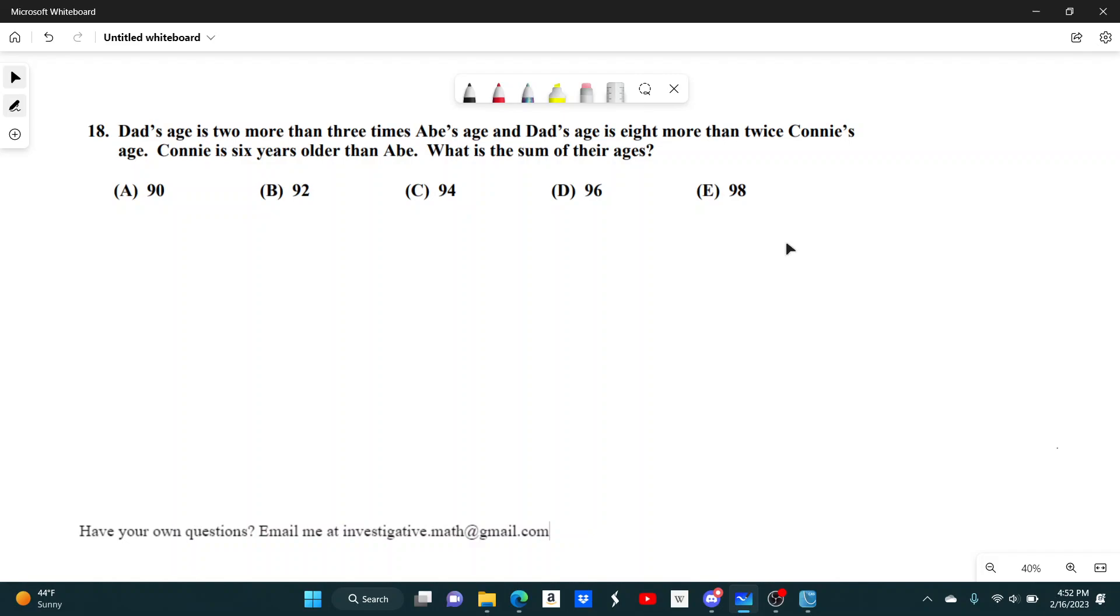So this is a pretty classic system of equations question between these ages. We can set up equations to represent the sentences that they give us. Dad's age is two more than three times Abe's age, so we can write that as D equals two more than three times Abe's age, so D equals 2 plus 3A.